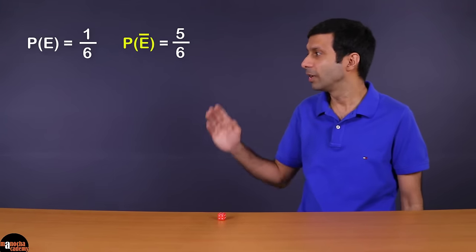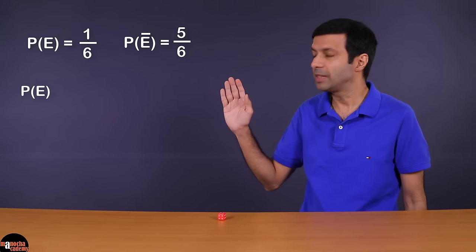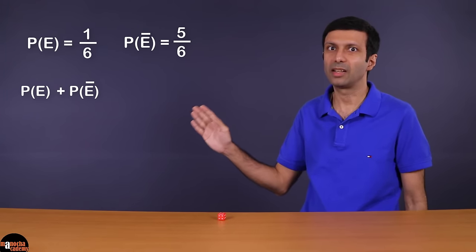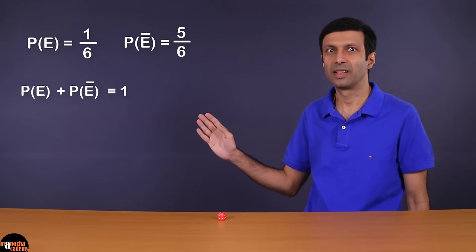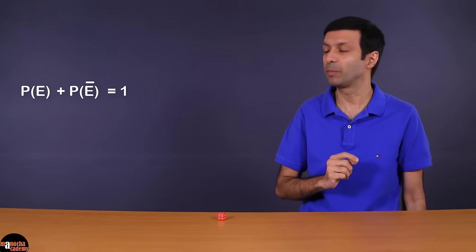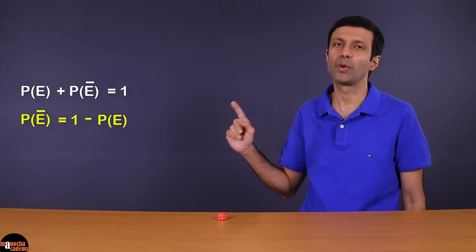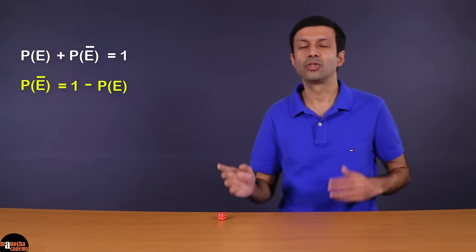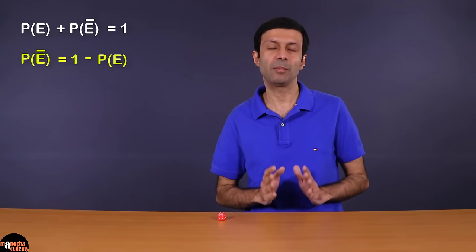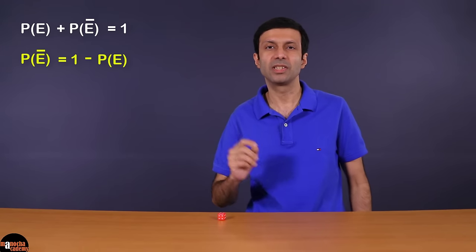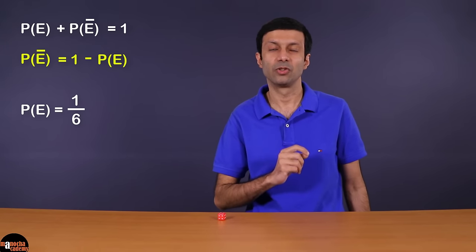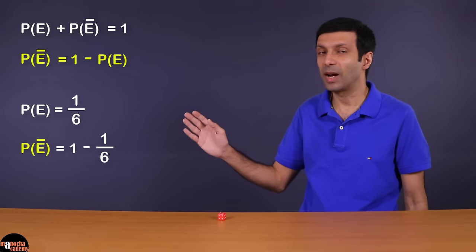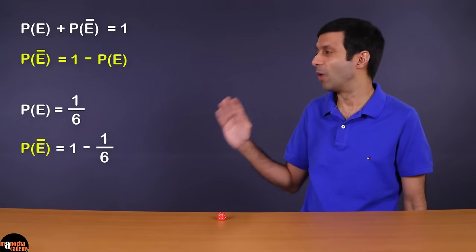If you look here, probability of event E plus probability of Ē equals one. So P(Ē) is going to be 1 minus P(E). If the probability of some event equals 1/6, then the probability of the event not happening is 1 minus 1/6, which equals 5/6.